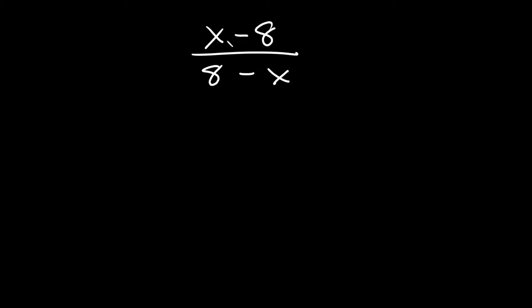Here we have x minus 8 on top and on the bottom we have 8 minus x. We almost have the exact same thing on the top and the bottom — but it's basically just flipped.